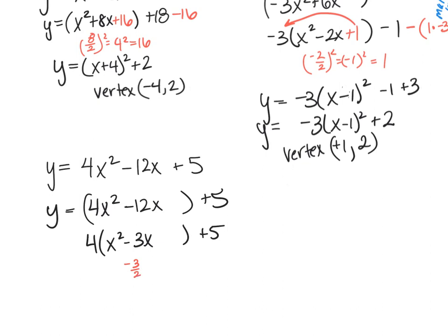So take the middle term, divide it by 2, and square it. And that gives me 9 fourths. I'm going to add it here. And I need to subtract it. And it gets multiplied by that 4. So it ends up being 9 fourths times the coefficient, 4, because there's 4 of those parentheses there. And that ends up being 9 fourths times 4 is 9.